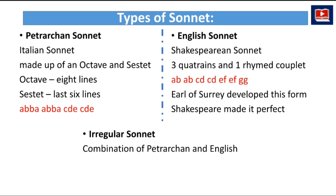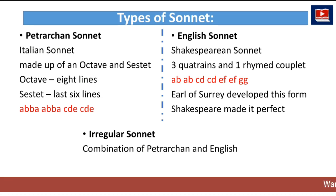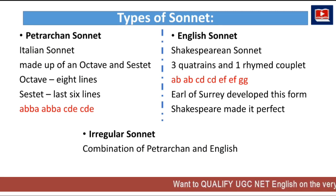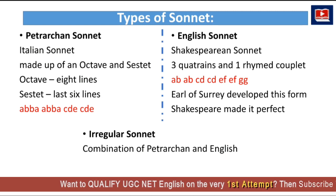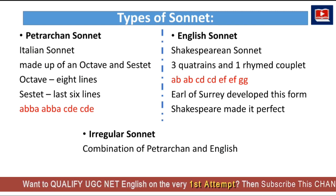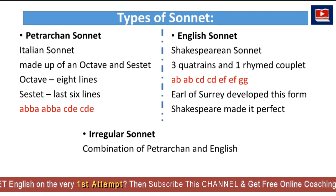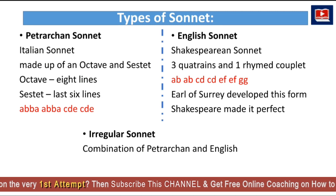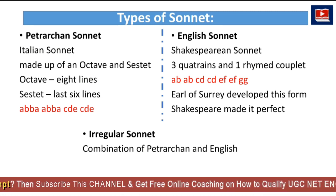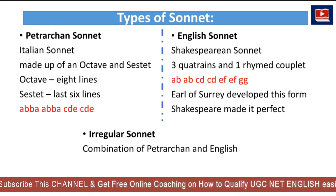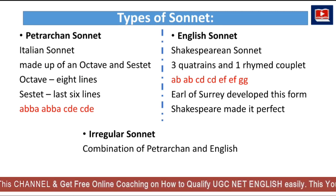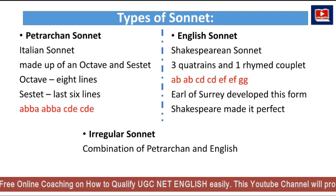The third type is the irregular sonnet, which is basically a combination of the Petrarchan and English sonnet. Poets combined the two different forms and wrote different poetry — that is the irregular sonnet.